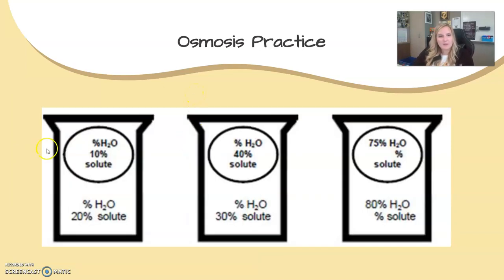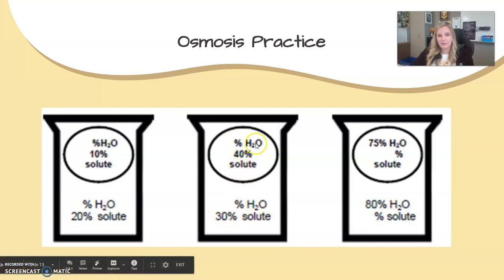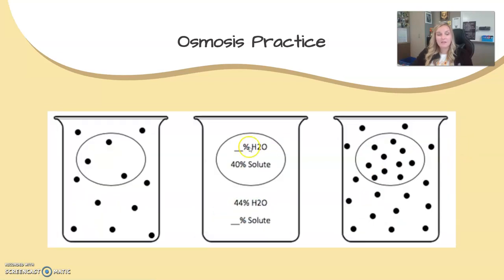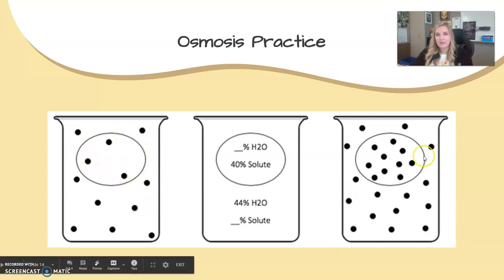Here are some examples to work through. Fill in the other percentage for each: 10% solute means 90% water; 20% solute means 80% water — water moves from 90% to 80%, so it moves outside the cell. Next: 60% water versus 70% water outside — water moves inside the cell. Then: 75% water inside versus 80% outside — water moves in. You'll also practice with dots representing water molecules to figure out the direction of movement.